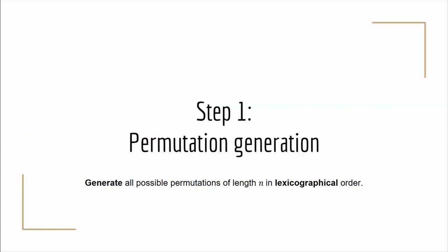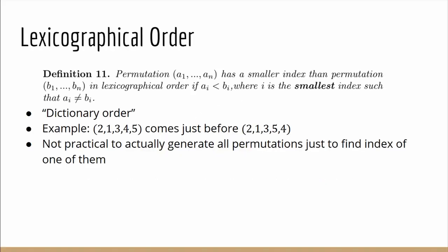So we start off by generating the permutations in lexicographical order which is defined here. It's also commonly known as dictionary order. So for example (2,1,3,4,5) comes just before (2,1,3,5,4). But it's not actually practical to generate all the permutations just to find one of them, the index of one of them.